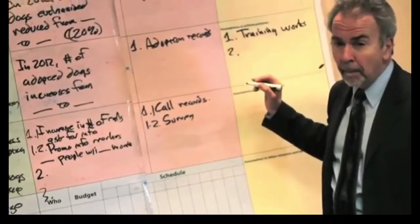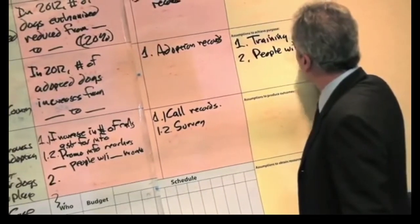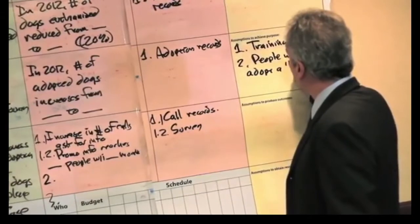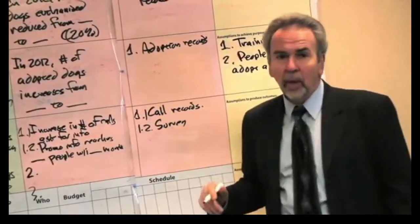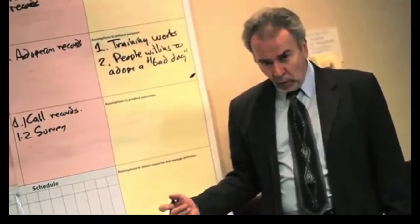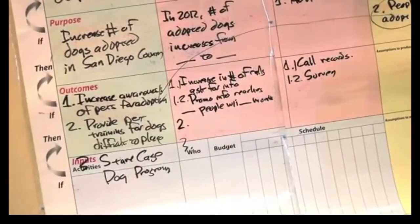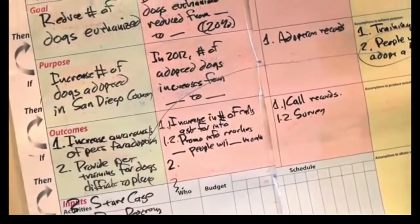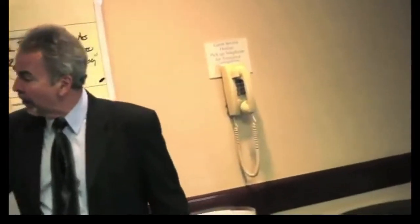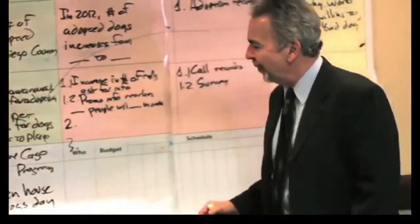People are willing to adopt a difficult dog. Now what can you do to reduce that risk, to influence that assumption? Let them know that you've trained the dogs and that they've improved. That might be part of the awareness program. People need more opportunities to see and interact with the dogs — so you might have an open house. And could we give incentives, like free training? We also have the outcome: provide pet training for dogs that are difficult to place.